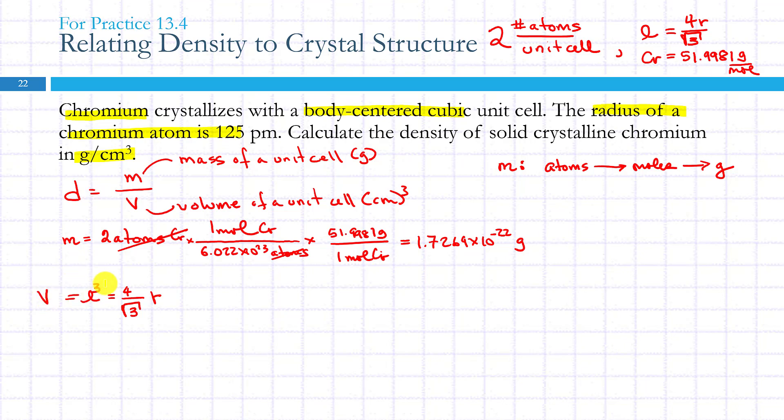If you want to save yourself a little bit of time, you can simply do this: the volume is equal to L cubed, and then you cube this result here. Now this can be calculated as 4 over the square root of 3 times 125 times 10 to the minus 12 meters, and then do the conversion. 10 to the minus 2 meters is one centimeter.